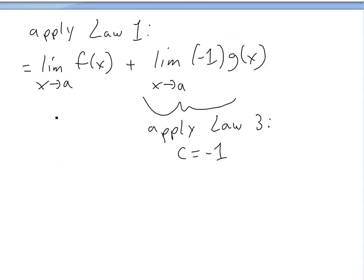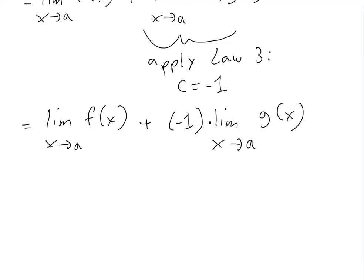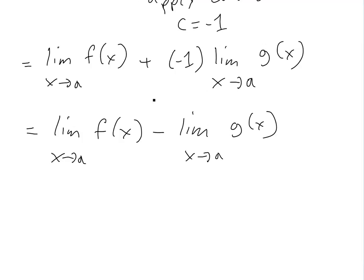We get: limit as x approaches a of f(x) plus the constant we took out, which is (-1), times the limit as x approaches a of g(x). When you're adding a negative, it's just a minus, so this is exactly a difference.